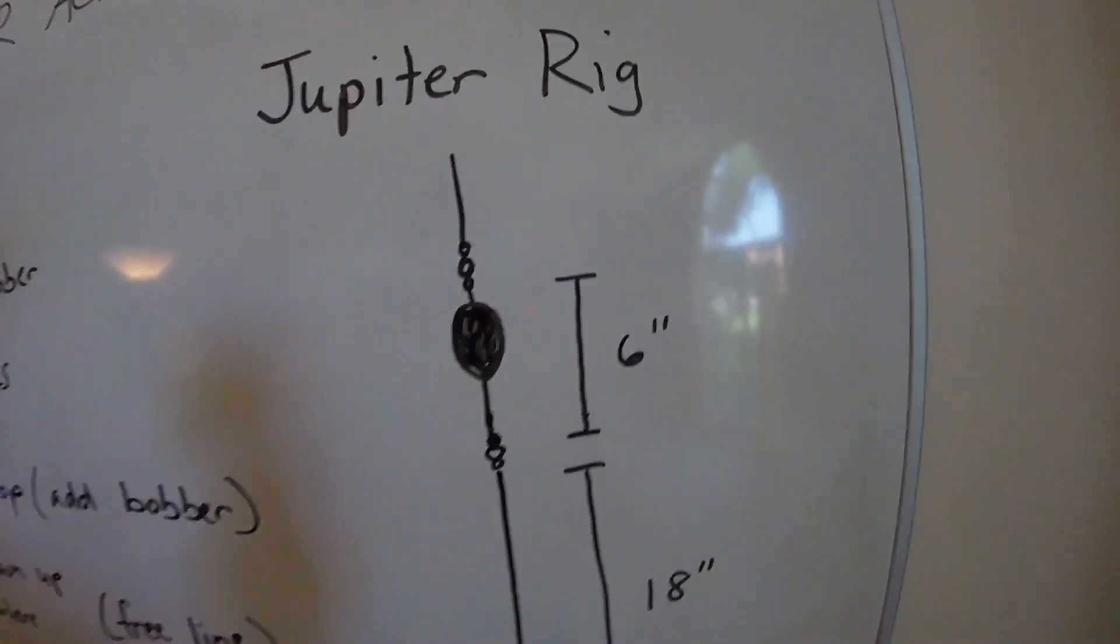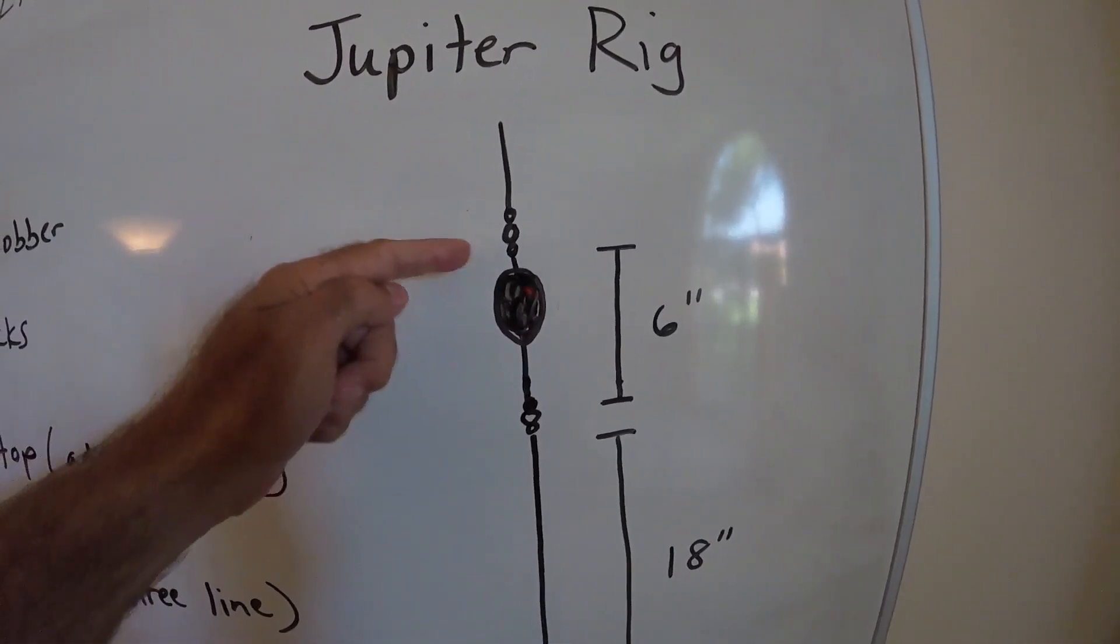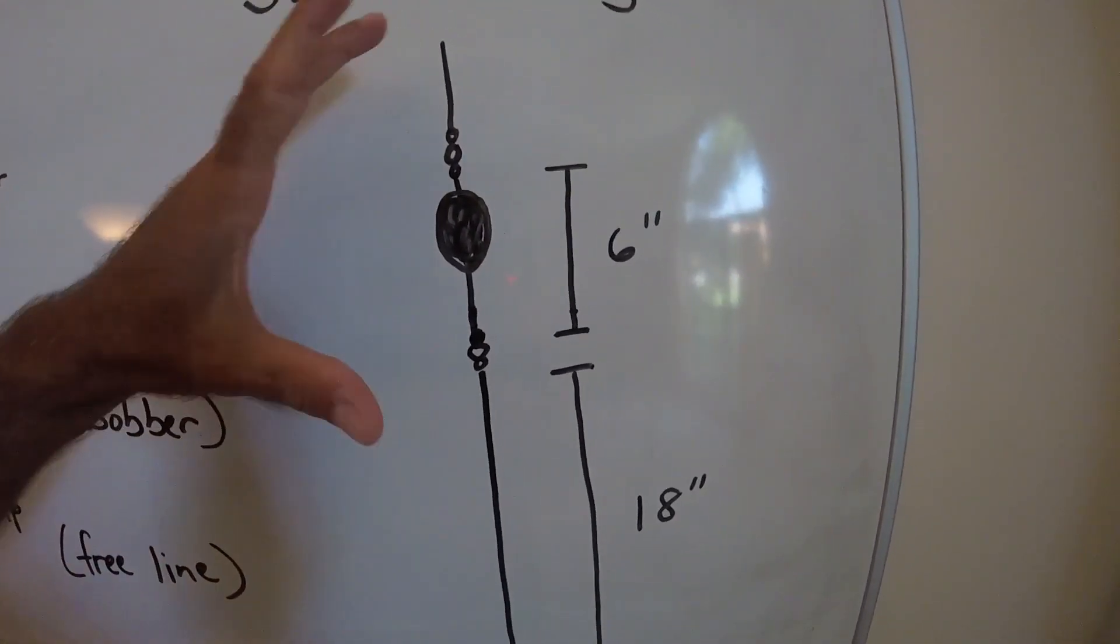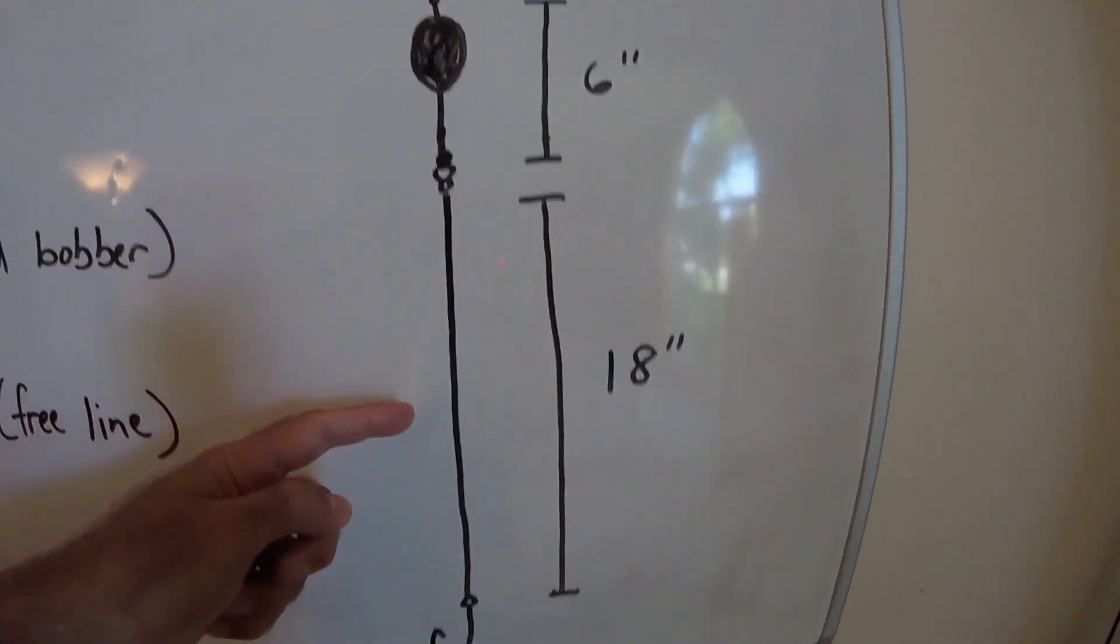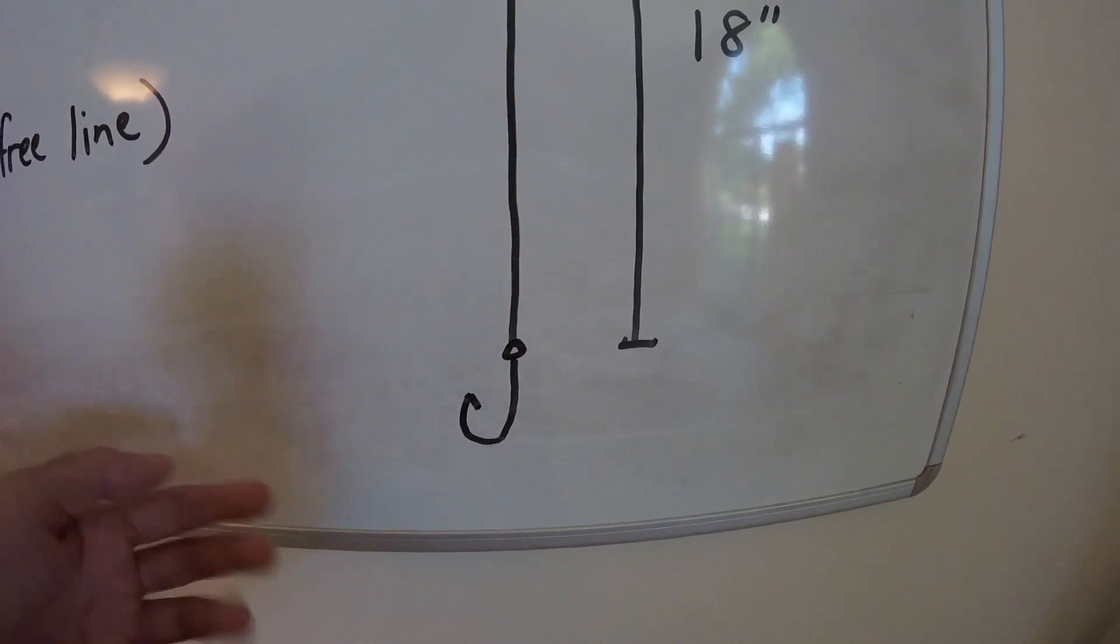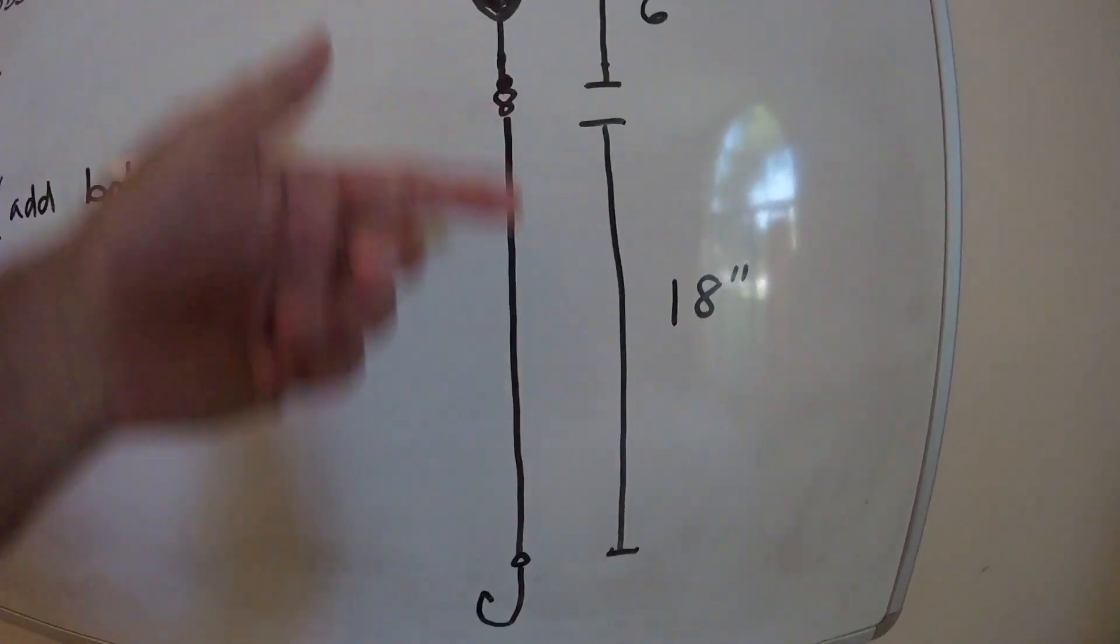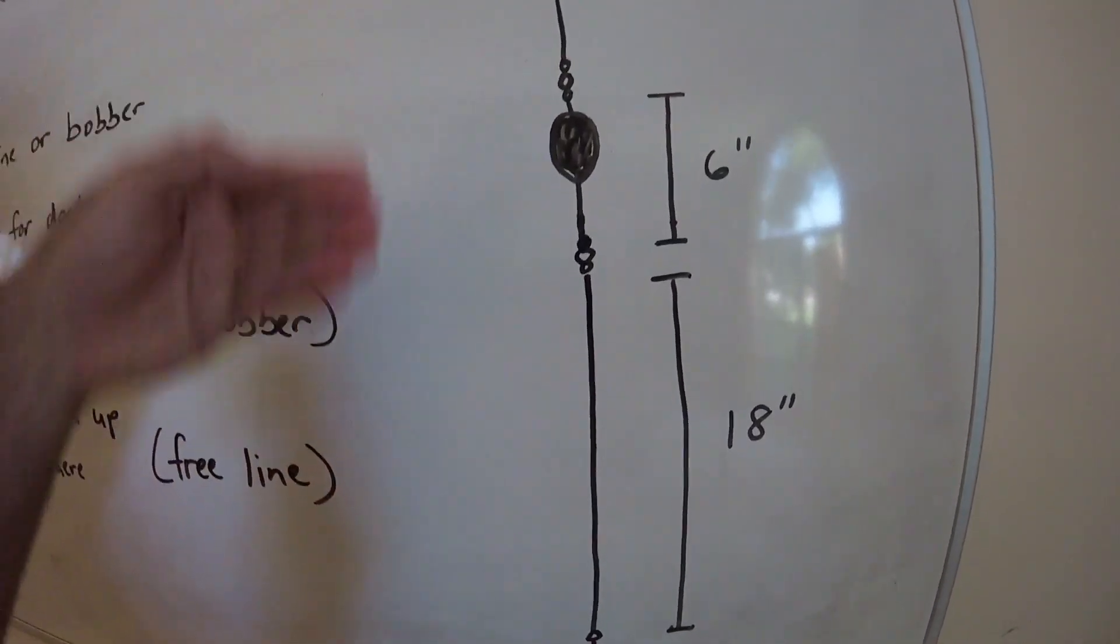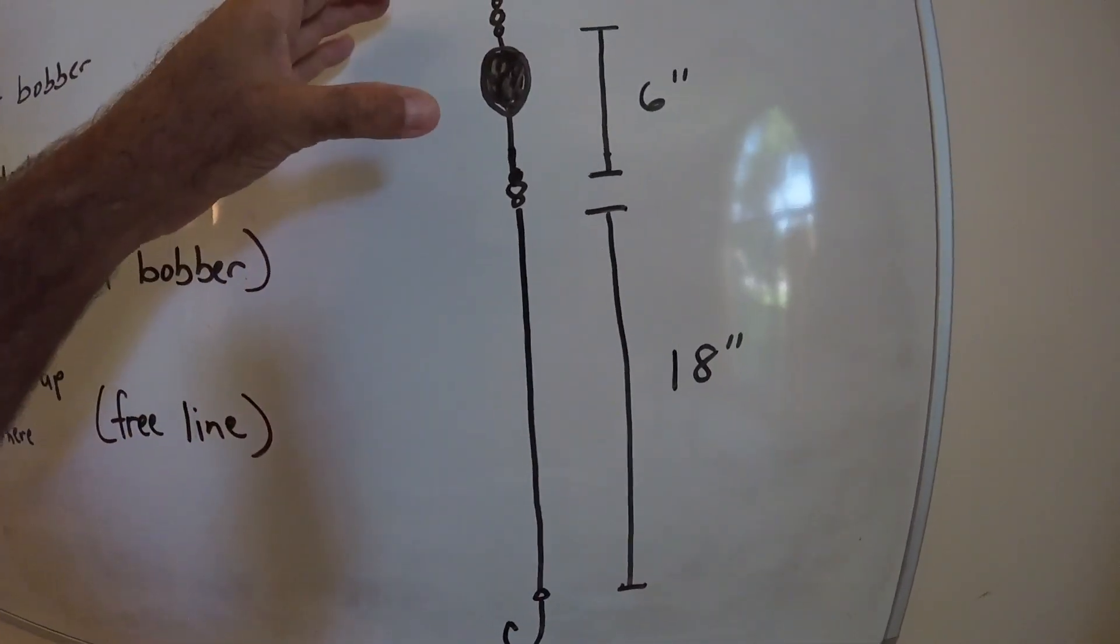I want to cover the Jupiter rig. It's a pretty simple setup: you have a barrel swivel, then an egg sinker, then another barrel swivel. This swivel can move up and down roughly six inches between your barrel swivels. Then you come down about 18 more inches to your hook and your live bait—croaker, pinfish, or mullet. This goes right on the bottom. You don't want to go much bigger than this because your bait will tend to spin in the current, which isn't a good presentation. If you keep it shorter like this, 18 and 6, it just kind of rolls along the bottom.